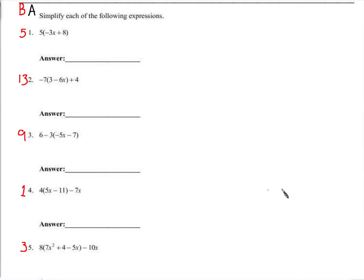Hey everybody, thanks for tuning in for this edition of Working Through a Quiz Together. I should explain here, these numbers are on the A version of the test and these numbers in red are the correlating numbers on the B version of the quiz. So if you have the B version, number one would be number five.